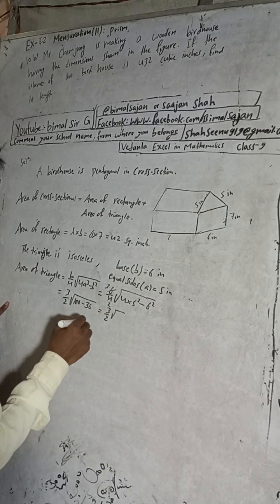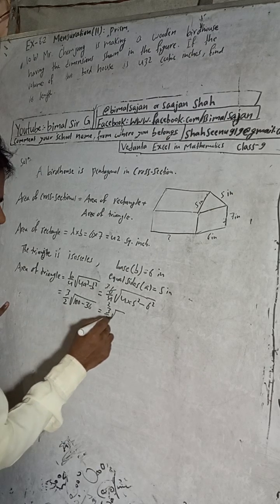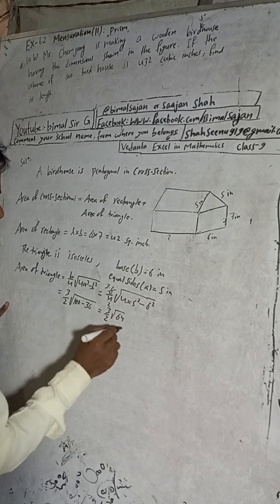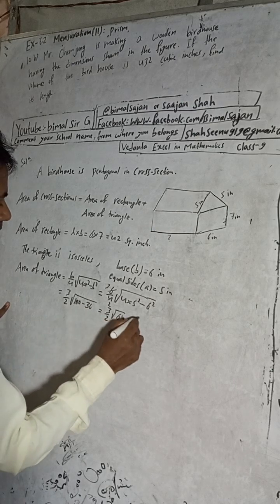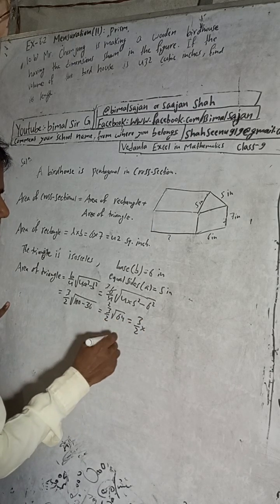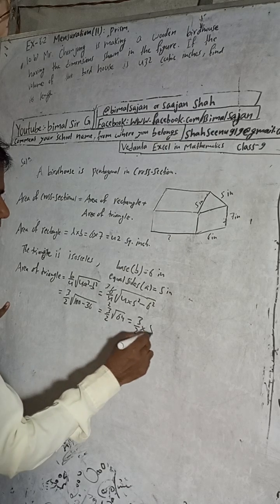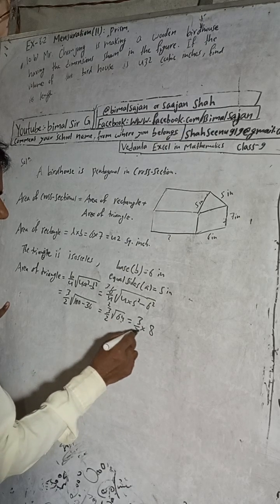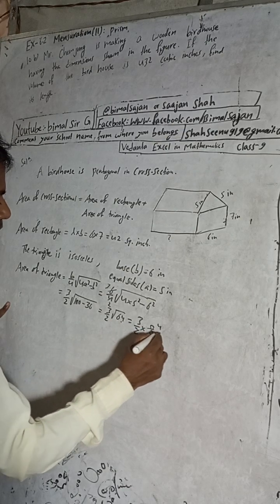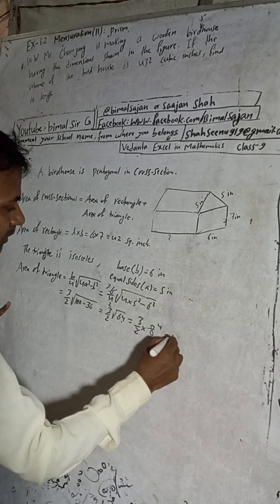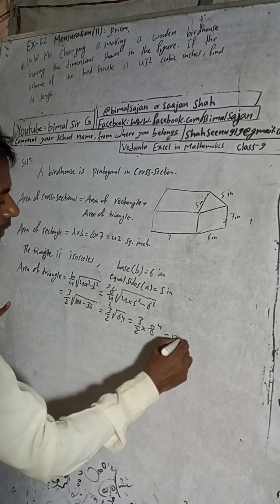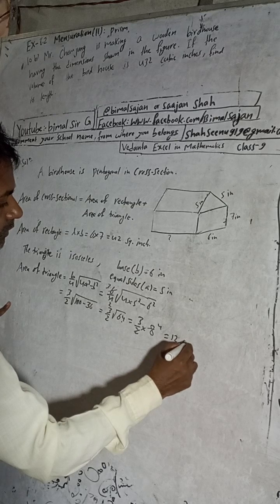100 minus 36 equals 64. So we have 3/2 times the square root of 64. The square root of 64 is 8. So 3/2 times 8 equals 12. We got area of triangle equals 12 square inches.